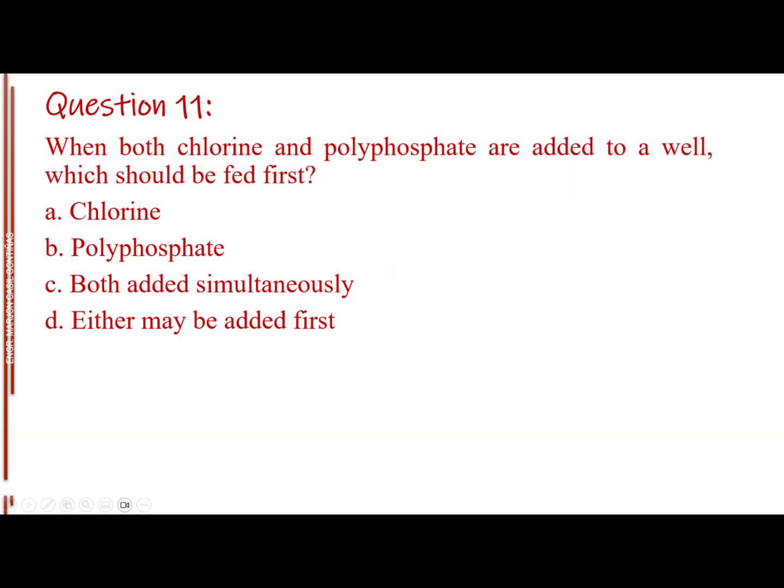Question number 11. When both chlorine and polyphosphate are added to a well, which should be fed first? Letter A, chlorine. Letter B, polyphosphate. Letter C, both added simultaneously. Letter D, either may be added first. The answer is Letter B, polyphosphate.